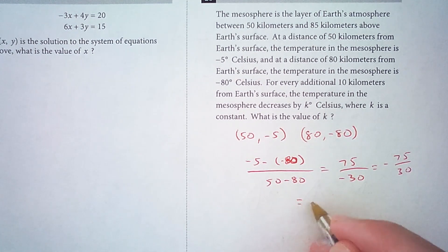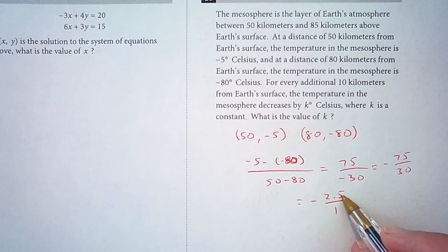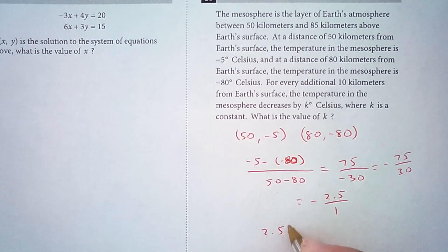So this is equal to negative 2.5 over 1, which means the temperature decreases 2.5 degrees Celsius for every one kilometer. So it's a 2.5 degree decrease per kilometer.